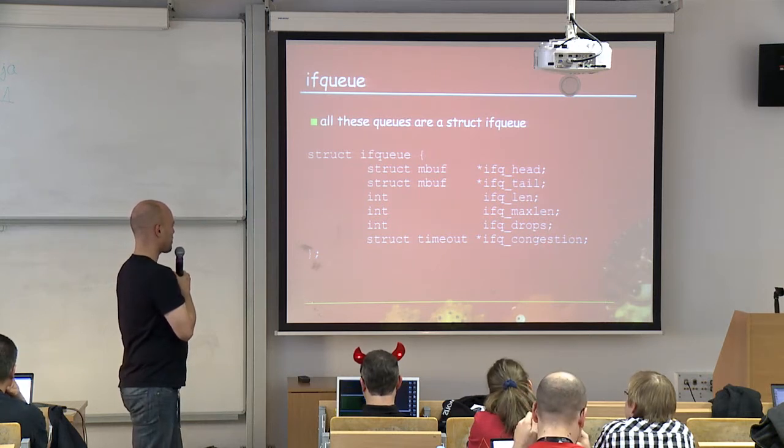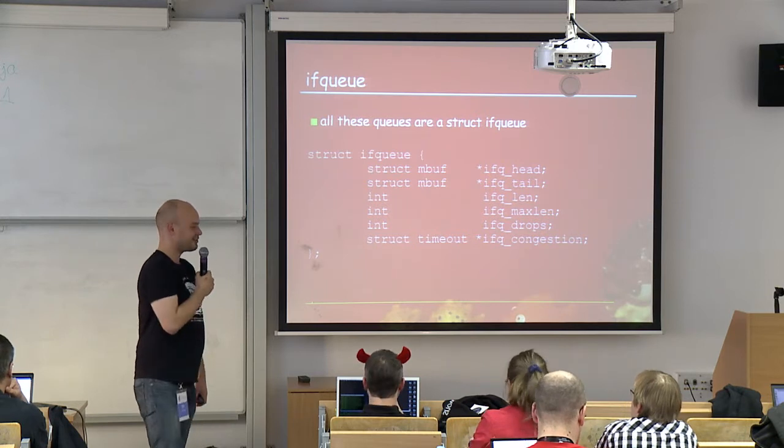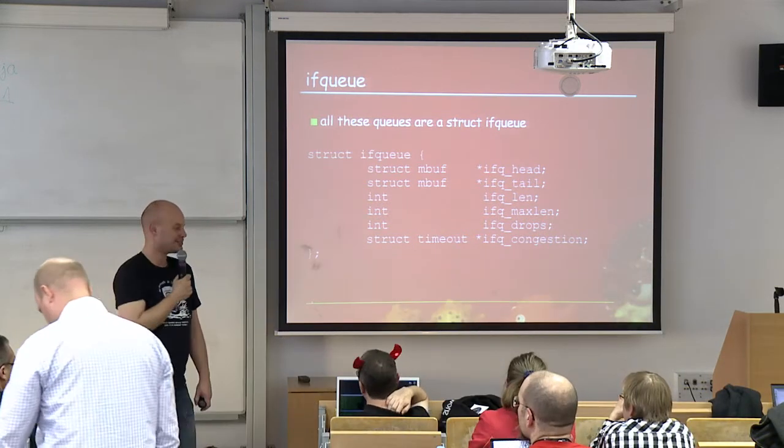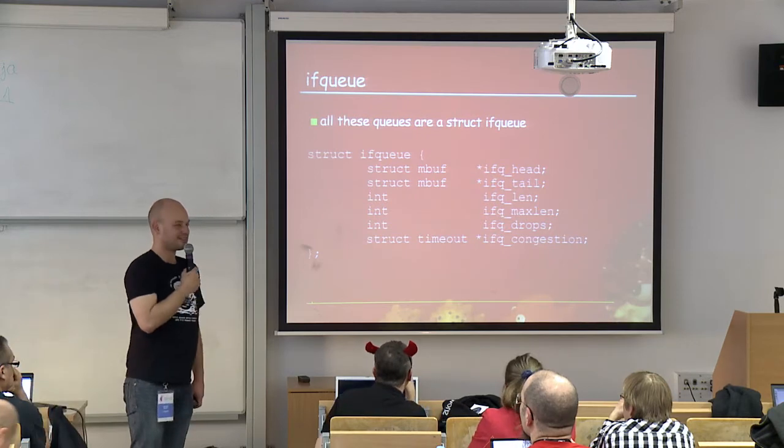There's also a congestion mechanism. When congestion is detected, a flag is set which makes certain subsystems skip expensive work. Namely, PF stops doing route evaluation and only handles established connections. When we're congested we're dropping packets anyway — this is just more selective dropping. But this is not the topic of this talk.